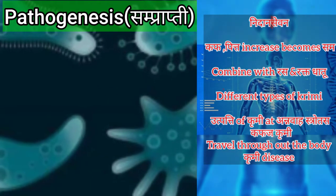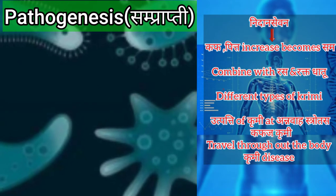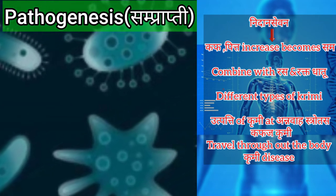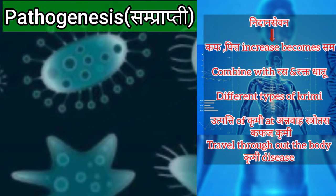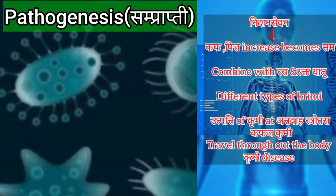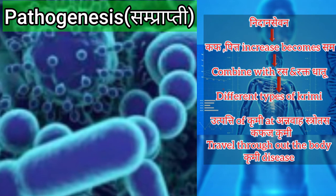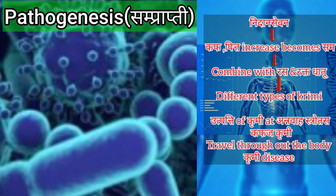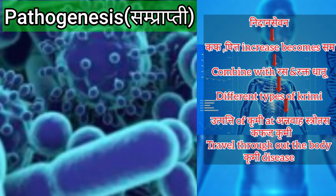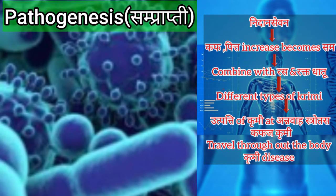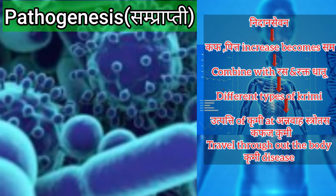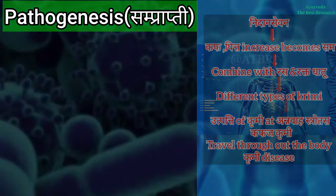Next is Pathogenesis, that is Samprapti. Due to intake of the predisposing factors, Kapha and Pitta aggravate and become Sama. They further combine with Ahara Rasa and Rakta Dhatu to form various types of worms at the site of Annavas Srotas. These worms are called Kapha Krumi. They originate at the Annavas Srotas and travel throughout the body to produce various symptoms.